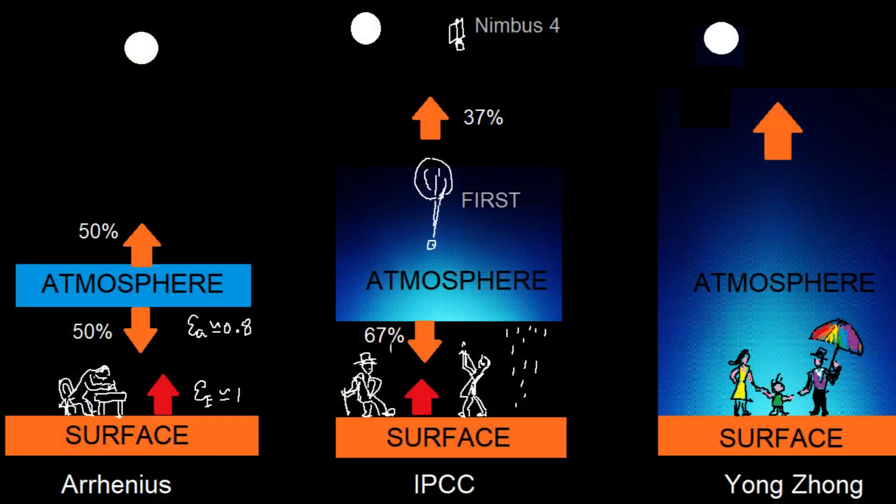But what if I tell you there is no surface infrared radiation at all in the presence of the atmosphere? What would you react? The end of the world?